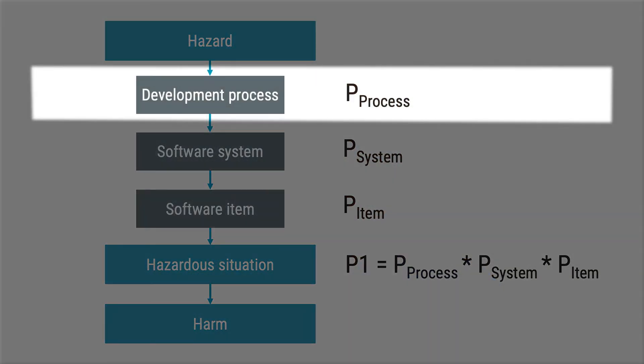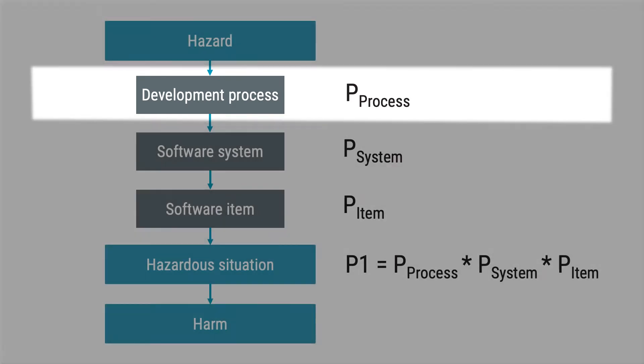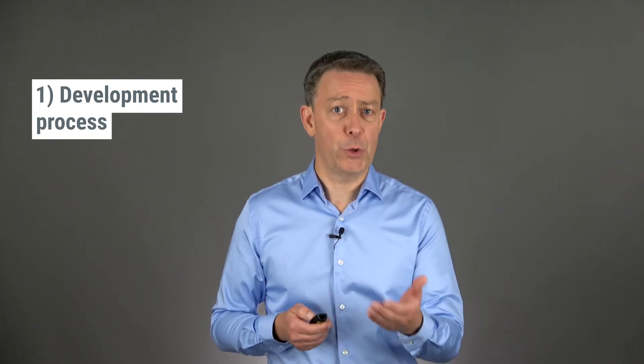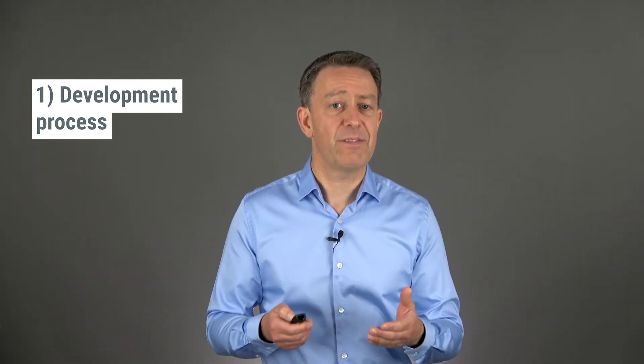First, you can ask yourself: what can you do in your development process to reduce the likelihood of failure? A well-established process is there to reduce the likelihood of mistakes and failures. I even have a checklist when I travel because I have forgotten my toothbrush too many times. A development process based on IEC 62304, class B or C, is a risk control measure on its own. But for class A software, there are no requirements for software risk management, which makes the value of such a process questionable.